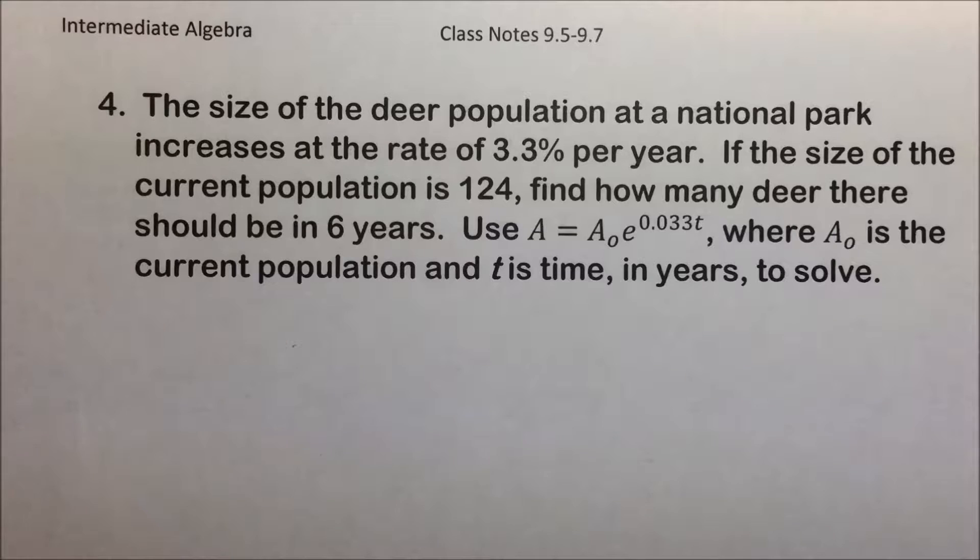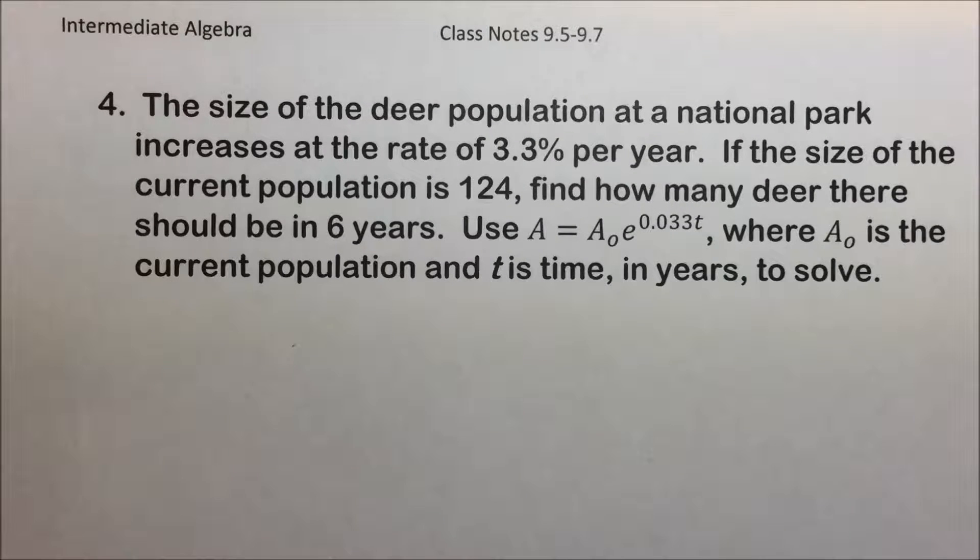The size of the deer population in a national park increases at the rate of 3.3% per year. If the size of the current population is 124, find how many deer there would be in 6 years. Use the formula A equals A sub 0 times e to the 0.033t power, where A_0 is the current population and t is the time in years to solve.